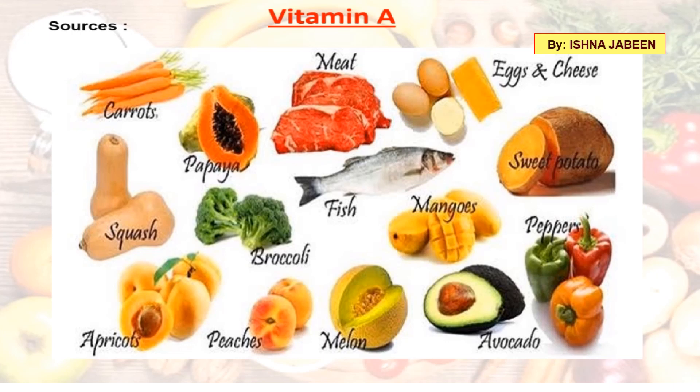Vitamin A improves vision in dim light and keeps the skin healthy. Sources include carrots, papaya, fish, meat, eggs, cheese, peppers, mangoes, broccoli, apricots, and peaches.